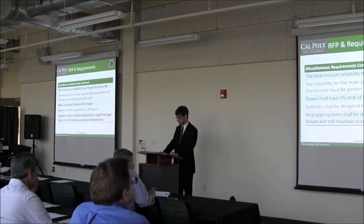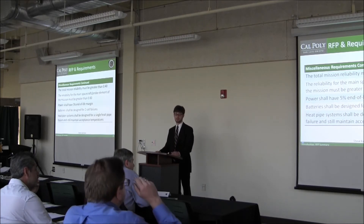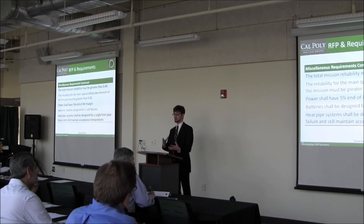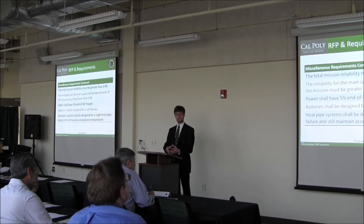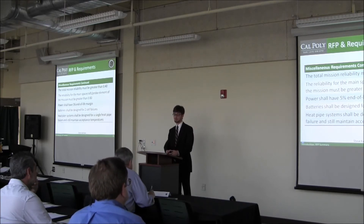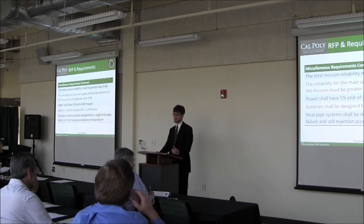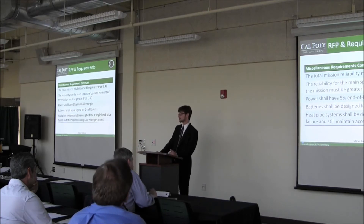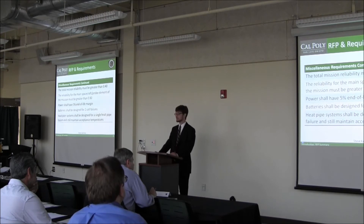We also have some miscellaneous reliability requirements. Our overall mission is required to have a 40% reliability. The orbiter and probe combination, however, has to have an 80% reliability. This means any other vehicles needed to fulfill the RFP just need to meet the 40% mission requirement, without specific vehicle-level reliability requirements. The power subsystem is designed to have a 5% end-of-life margin, and batteries need to handle two cell failures. The thermal subsystem needs redundant heat pipes to maintain acceptable temperatures in case of a single pipe loss.